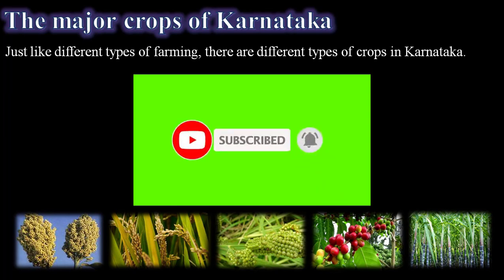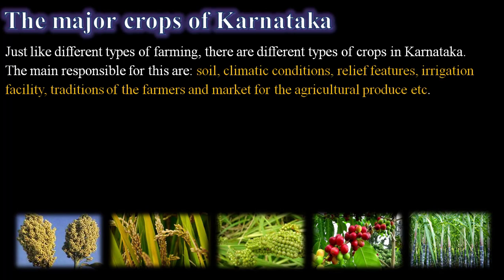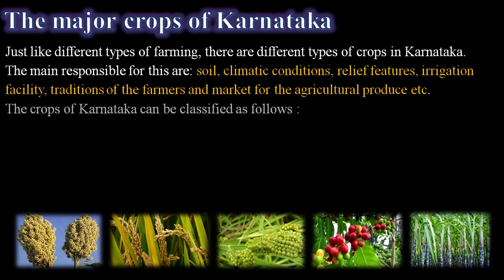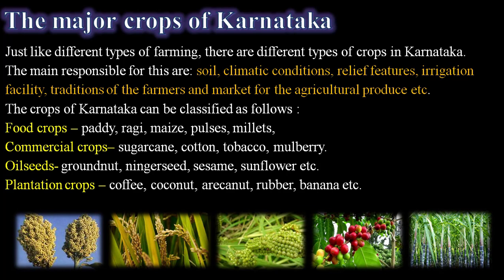Just like different types of farming, there are different types of crops in Karnataka. The main factors responsible for this are soil, climatic conditions, relief features, irrigation facility, traditions of the farmers, and market for the agricultural produce. These factors play a very important role. The crops of Karnataka can be classified as follows.